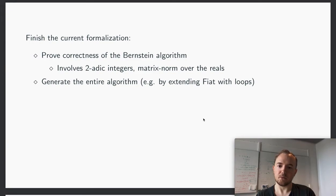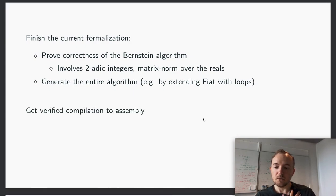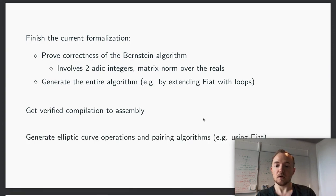Future work: first of all, we would like to prove the actual algorithm correct. But as I mentioned, the proof in the paper is on a higher level, so this requires including other libraries for Coq to be able to prove this correct. We would also like to be able to generate the entire algorithm. We've also looked into getting full verification to assembly, for example by using CompCert, but there are some primitives that Fiat uses that CompCert does not support at the moment. Finally, a long-term goal would be to generate elliptic curve operations and pairing algorithms, and this is where we would be able to use the inversion that this project has formalized.